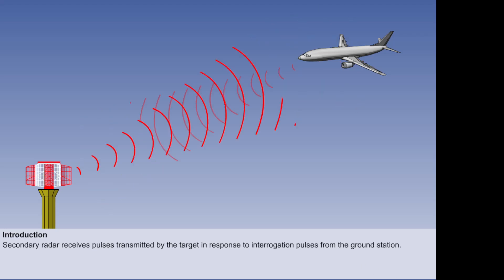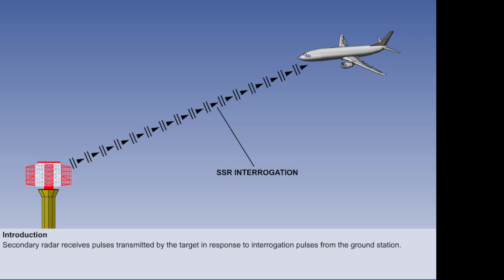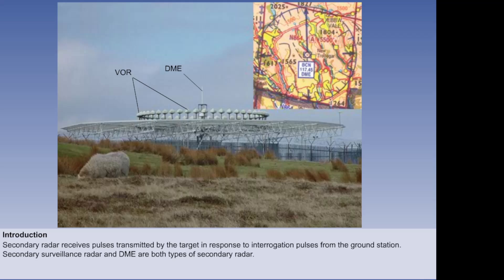As we have seen, primary radar works on the echo principle and relies on the reception of a reflected pulse. However, secondary radar works on the principle of interrogation and response, and hence the interrogator relies on a reply being transmitted. Secondary Surveillance Radar, abbreviated to SSR, is one type of secondary radar.